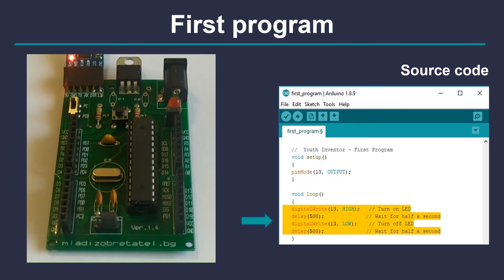Then turn off the LED on line number 3. Wait half a second, which equals 500 milliseconds. When it's done with the last row, go back to the first one and start again. That is all.